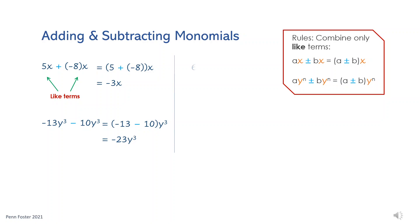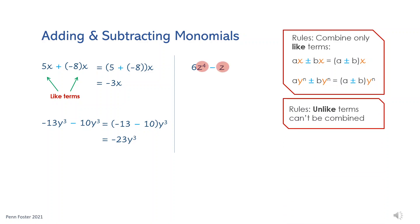Subtract 6z to the power 4 minus z. The two terms are unlike because the variables are not identical. In this case, subtraction cannot be performed. Similarly, adding negative 9xy squared plus 2y squared — the variable parts of the two terms are not identical, therefore no addition is possible.